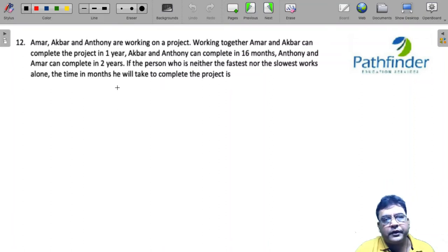So CAT 2021, slot 1, question number 12. Amar, Akbar and Anthony are working on a project. Working together, Amar and Akbar can complete the project in one year. Akbar and Anthony can complete in 16 months. Anthony and Amar can complete in two years. If the person who is neither the fastest nor the slowest works alone.